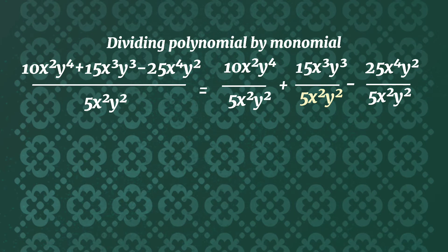To find the quotient, you are going to factor each numerator and denominator. Let's start with 10x²y⁴ divided by 5x²y². Look for the greatest common monomial factor.